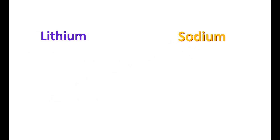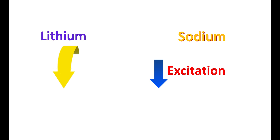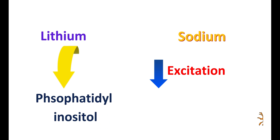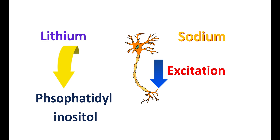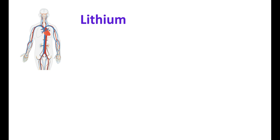Lithium acts like sodium but replaces it in many cells, reducing excitation. Although the exact mechanism is unknown, lithium can interfere with signaling pathways like the phosphatidylinositol system and modify neuronal excitation by replacing sodium. In this way, lithium reduces neuronal activity and excitation, making it effective for controlling the manic phase in bipolar disorder.